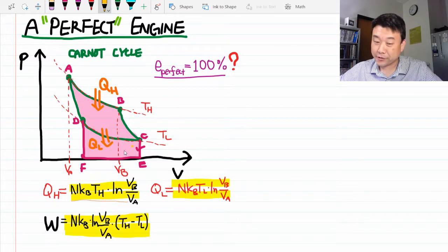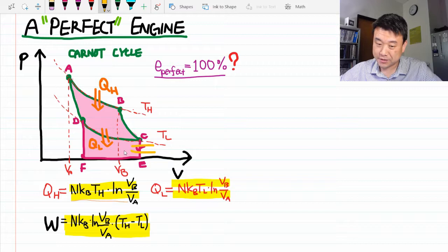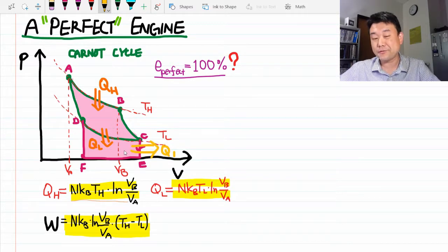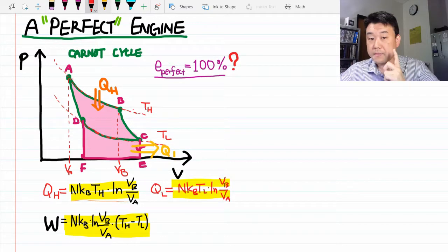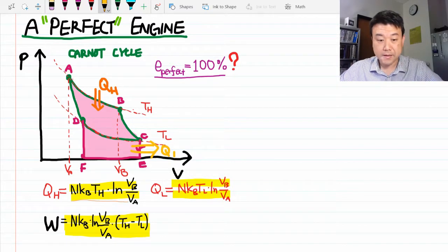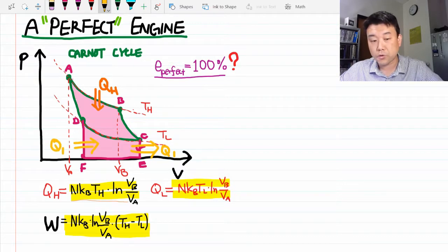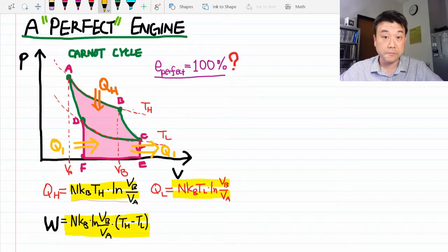In this isochoric cooling, you must expel some heat. So it's not true that there was no waste heat expelled. Then maybe you realize, at this isochoric heating, there's heat entering your gas. This must actually be the same amount of heat, because you are going back up to the same isotherm.